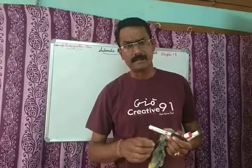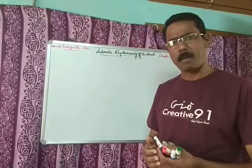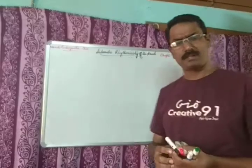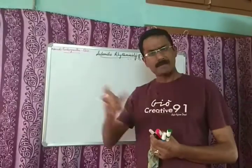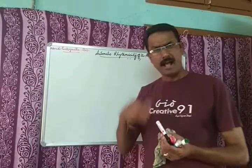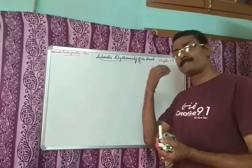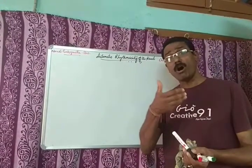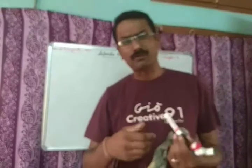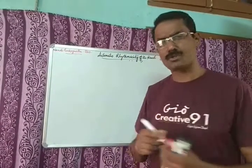Good morning students. Let's move to another part related to blood circulation which happens through the heart — the automatic rhythmicity of the heart. First let's look at the diagram of the heart.